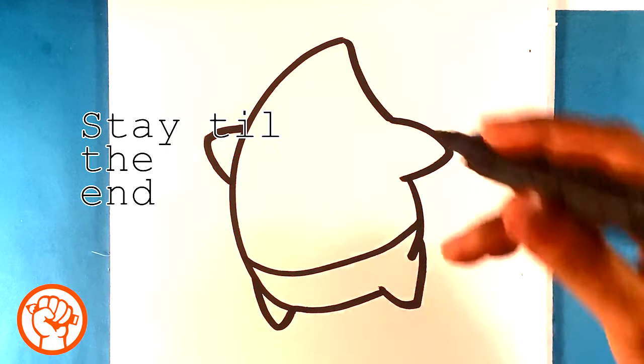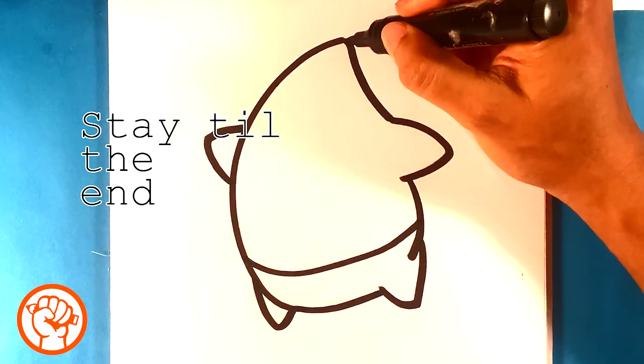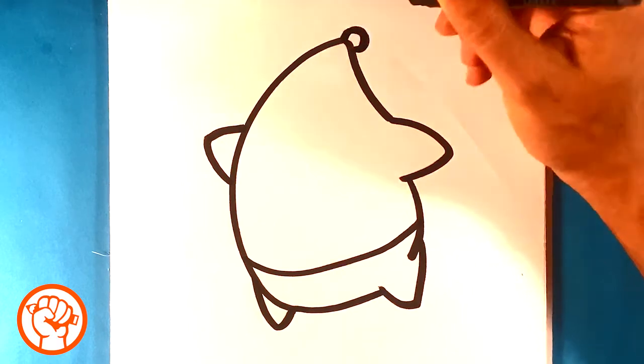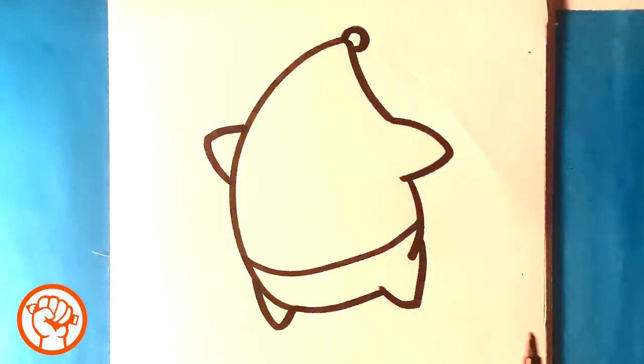But yeah, so now we're going to go at the end of his tip of his head. Okay, so far really easy, right? Real simple. Like I said, just slowly step by step. We're dealing with simple shapes. That's really important when you're drawing anything because simple shapes really tend to make everything a lot better.